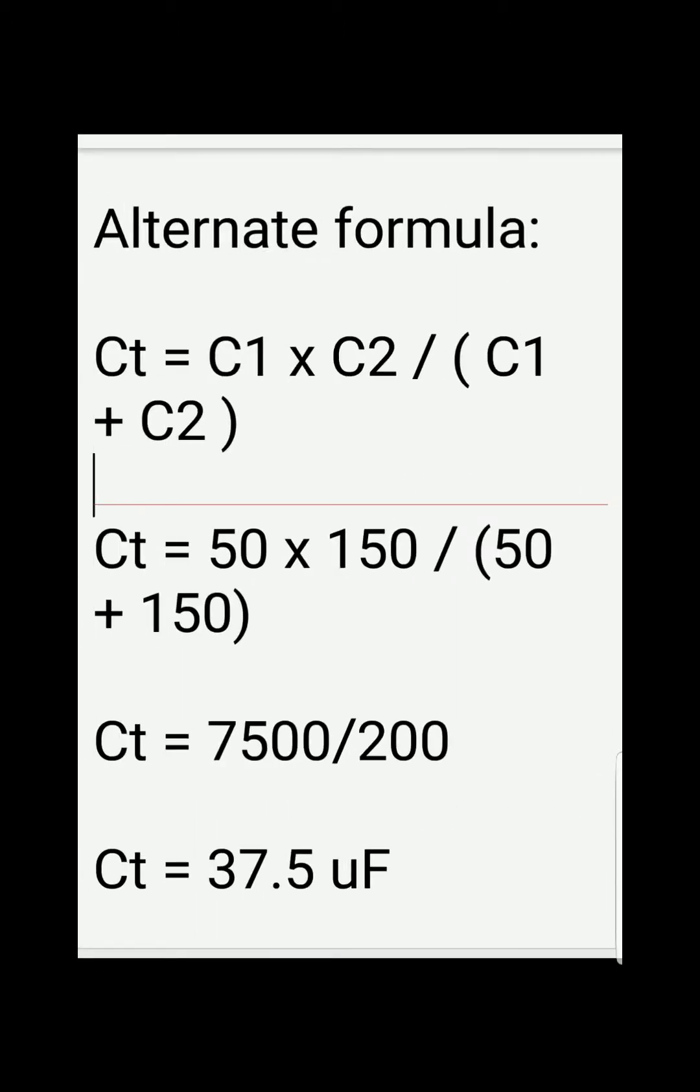There's an alternate formula for solving capacitance. I find this one easier: just multiply the two capacitances divided by the sum of the two capacitances. So we've got Ct = C1 × C2 / (C1 + C2), which equals 50 × 150 / (50 + 150).